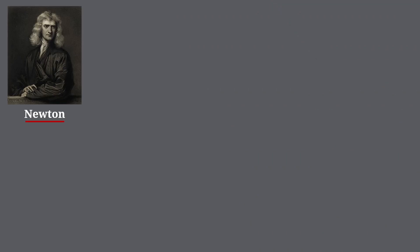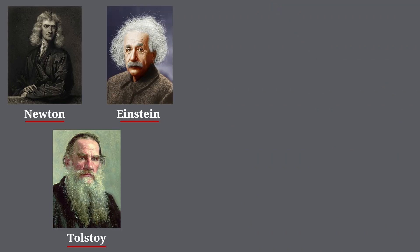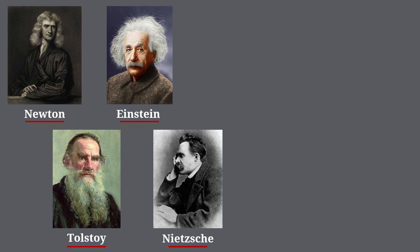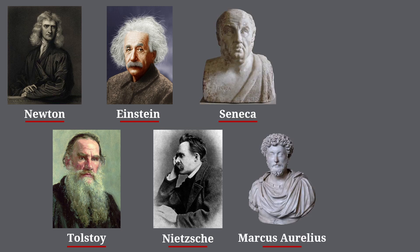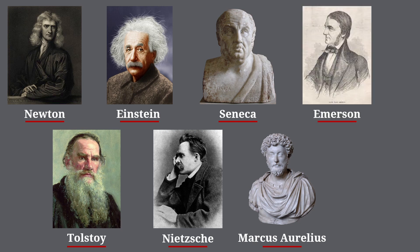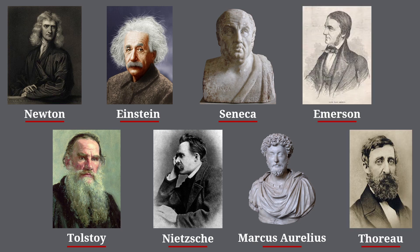These thoughts, ideas, nuggets — the personal wiki — become the seeds of fruit which will hopefully emerge later in your life. Isaac Newton called it his 'waste book.' Leo Tolstoy, Albert Einstein, and Friedrich Nietzsche were all said to have kept one. Stoic philosophers Seneca and Marcus Aurelius encouraged keeping a journal of thoughts and meditations. Ralph Waldo Emerson and Henry David Thoreau were taught at Harvard to keep commonplace books.